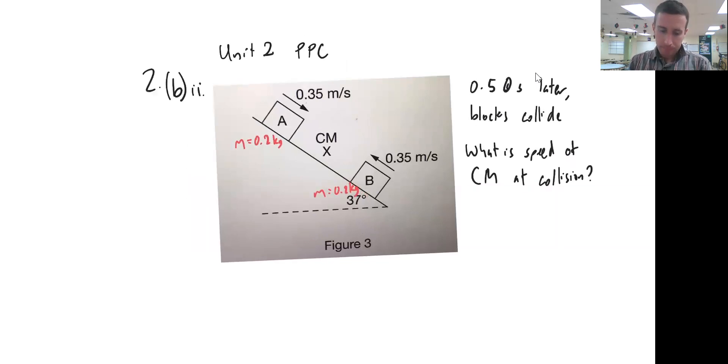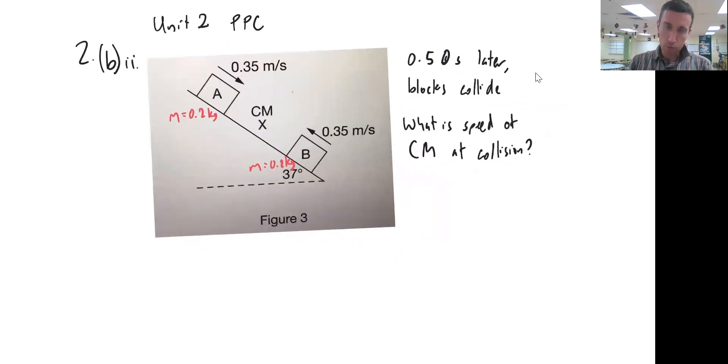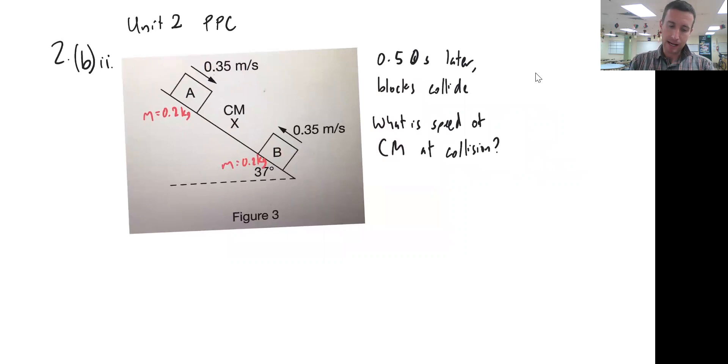So it has two blocks that are moving towards each other. One is going downhill with a speed of 0.35 meters per second, block B is going uphill with a speed of 0.35 meters per second. Each block has a mass of 0.2 kilograms, and it designates that the center of mass is this point right in the middle of those two blocks.